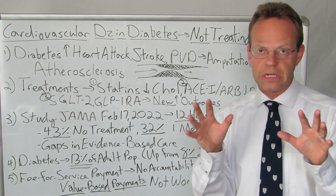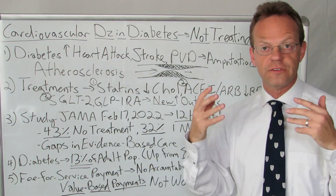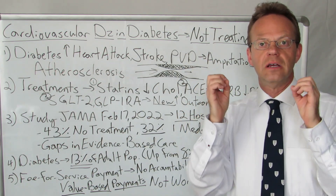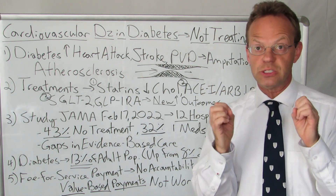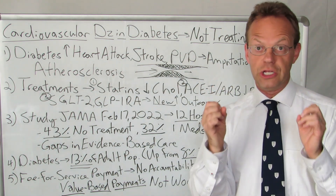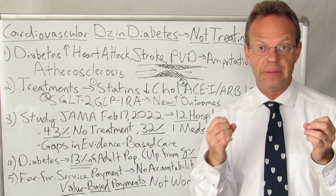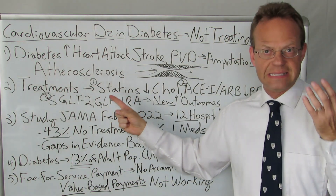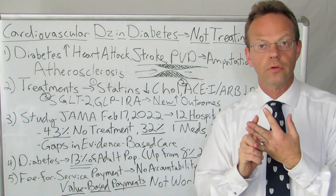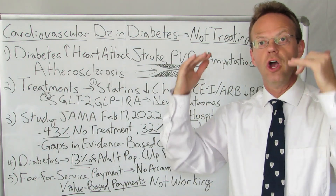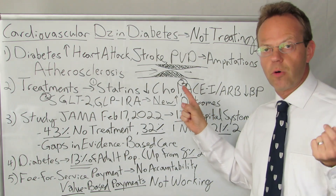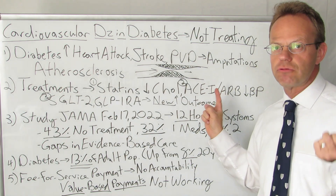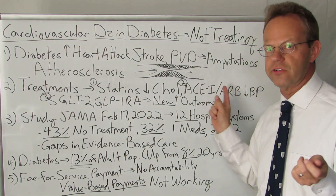So if anyone should be treated for their atherosclerosis — what is oftentimes referred to as cardiovascular disease — it's people with diabetes. And we have a lot of really good treatments that fall into three categories. One is statin medications like Lipitor and Crestor — cholesterol-lowering medications. Category two is what are referred to as ACE inhibitors or angiotensin receptor blockers, ARBs.